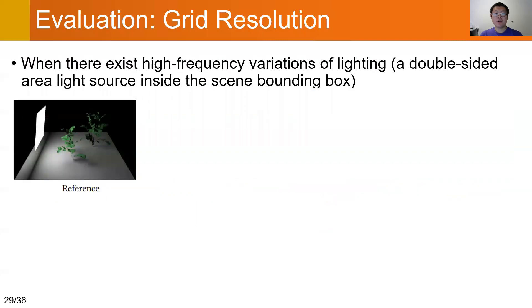When there exists high-frequency variations of lighting, for example in this scene, we have an area light inside the scene bounding box. A high-resolution grid may be required.